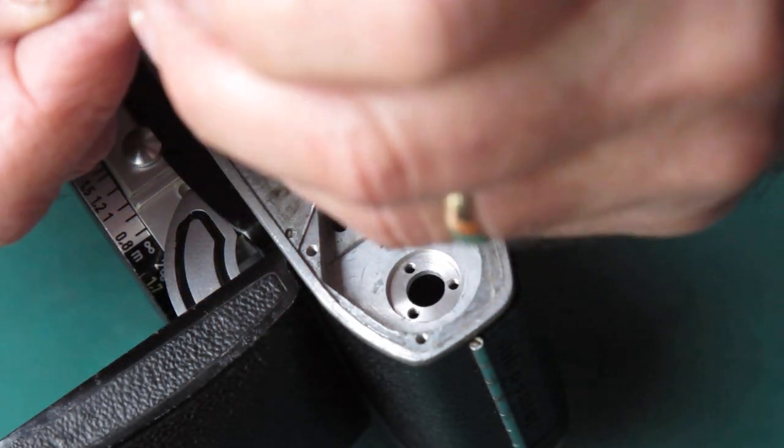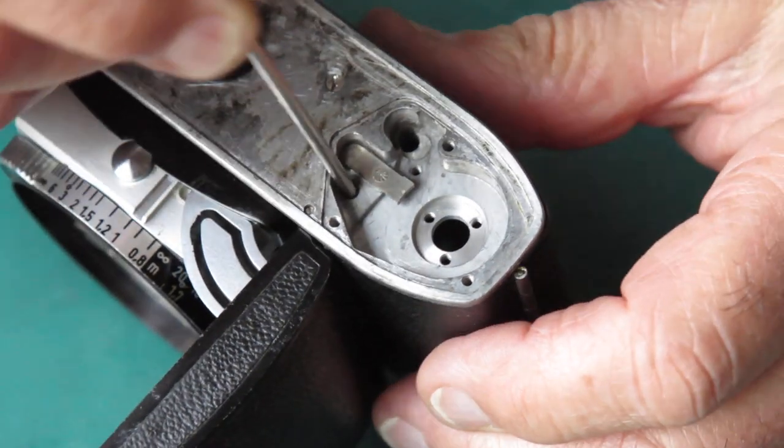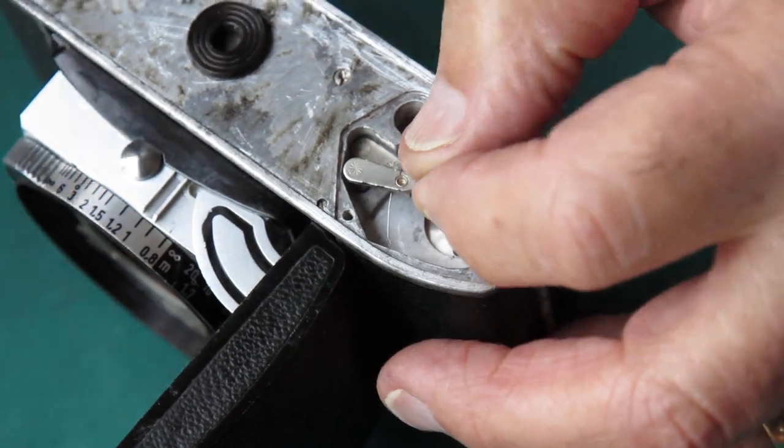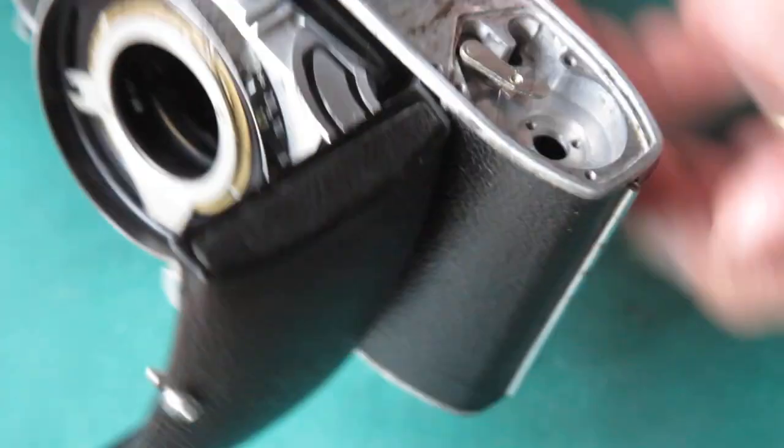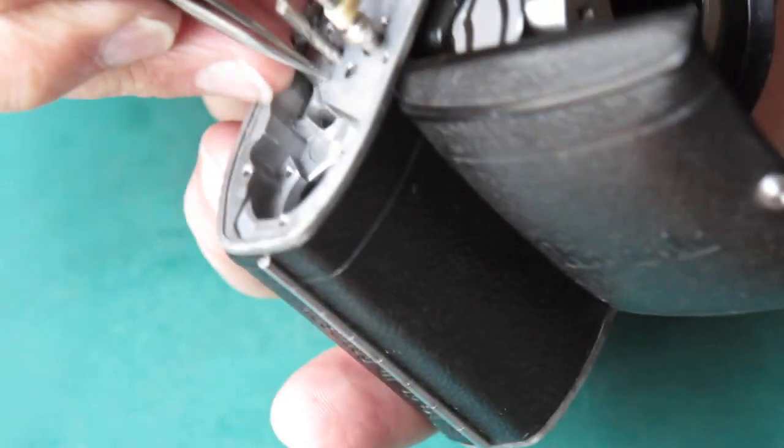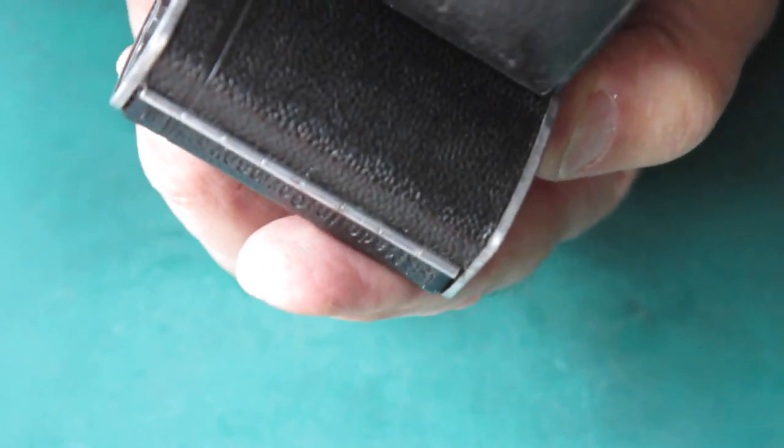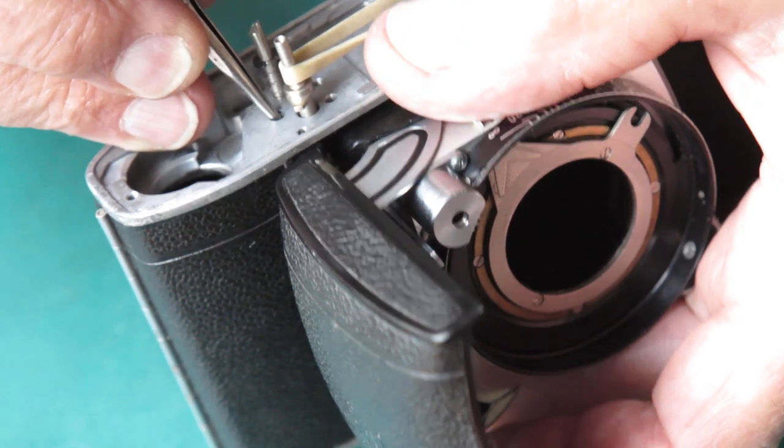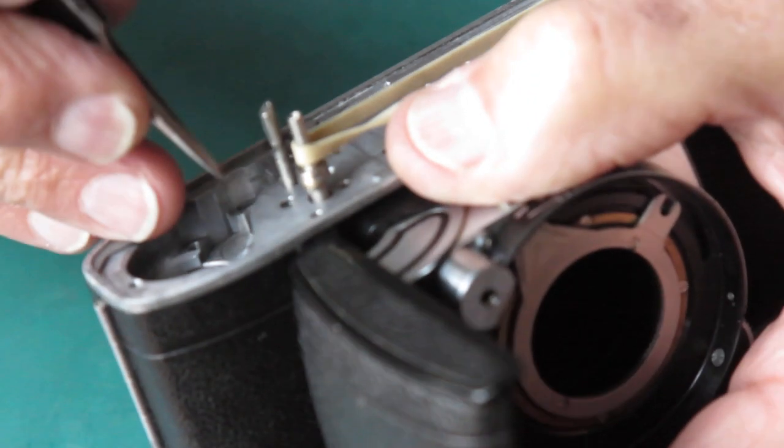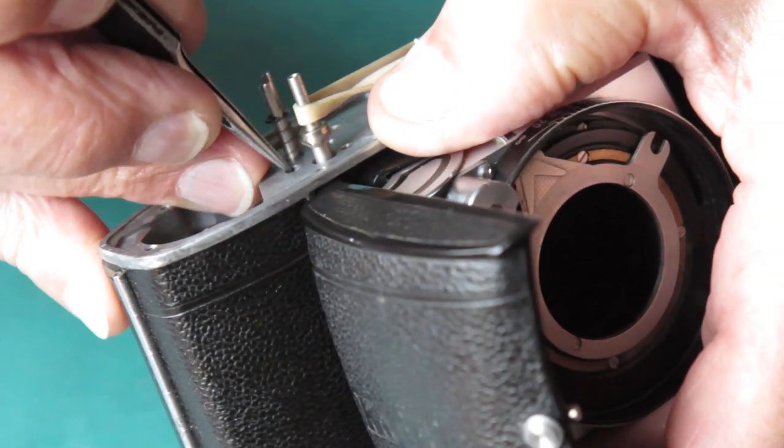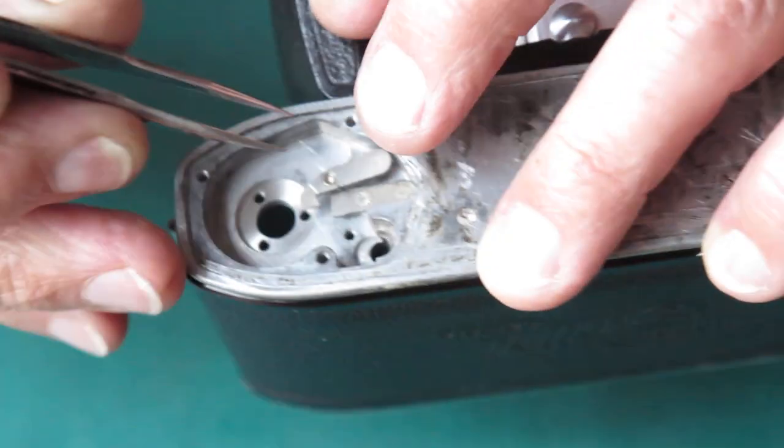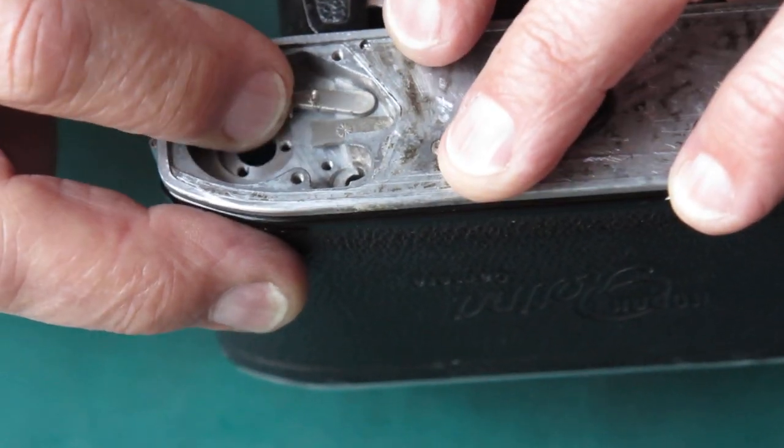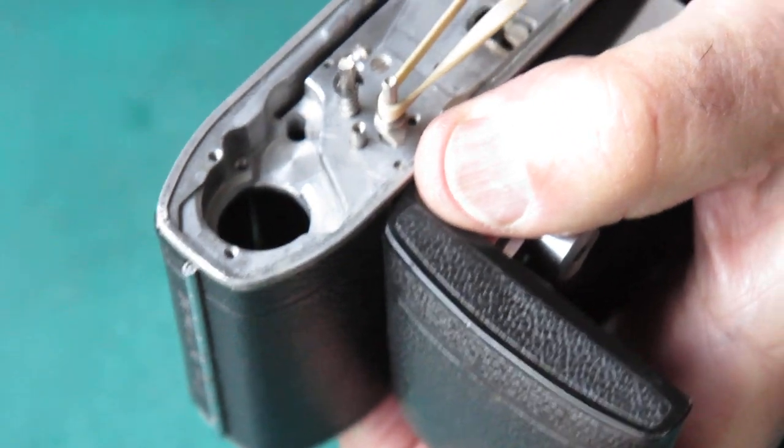So the release lever drops down in here. Be careful not to catch that spring on the edge of the body, otherwise you'll end up bending it, just as it was bent before. Guide that up through the hole in the body at the top here. It's miles away from where it needs to be. Be aware of that spring at all times. That's sitting in position now.